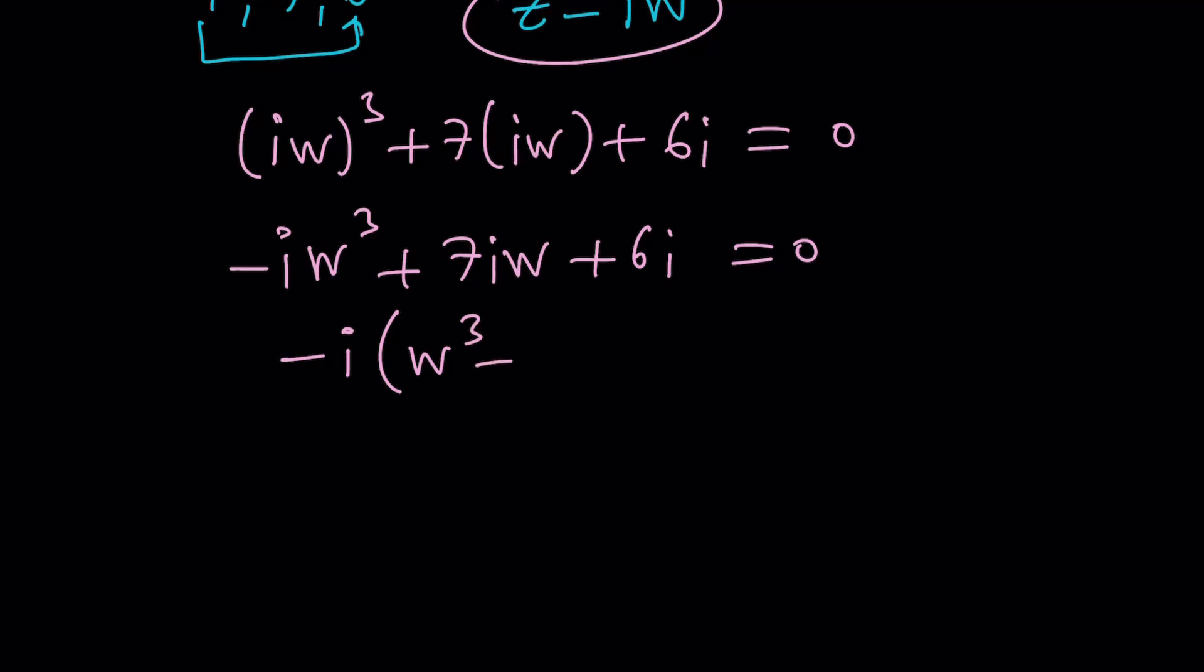Because I is a common factor as well as negative I, this gives us W cubed. And the reason why I want to take out negative I instead of positive I is I want to make the leading coefficient 1. That's going to be minus 7W minus 6. And the whole thing is equal to 0. I does not equal 0, so we can divide both sides by negative I. And this gives us W cubed minus 7W minus 6 equals 0.